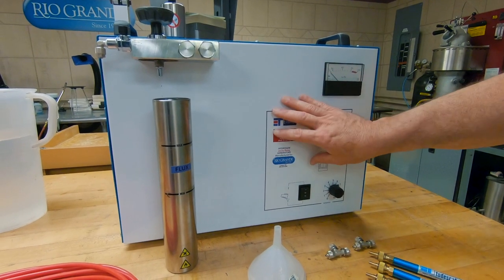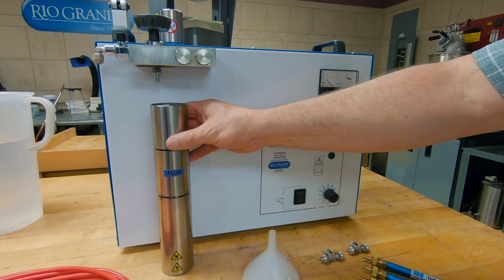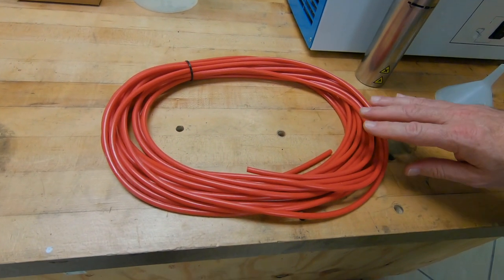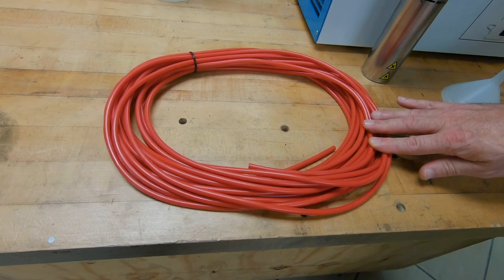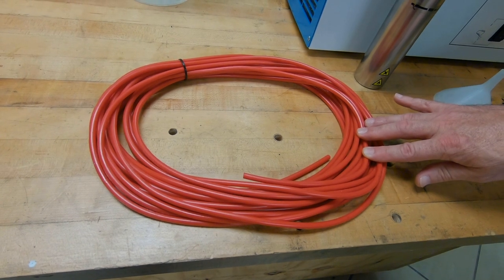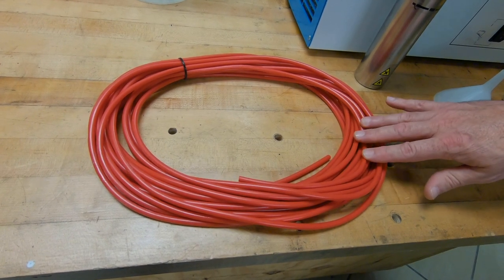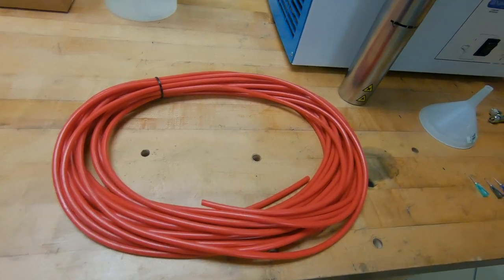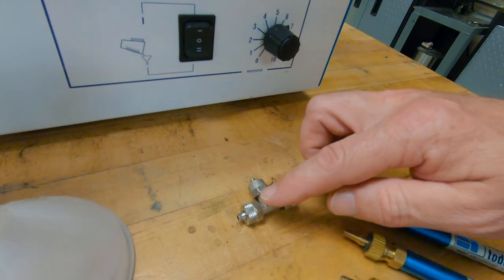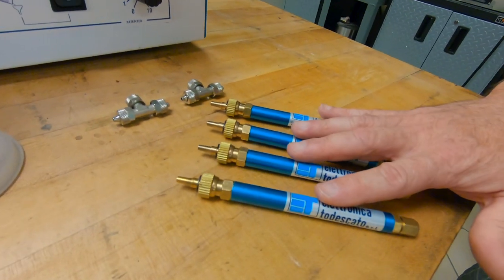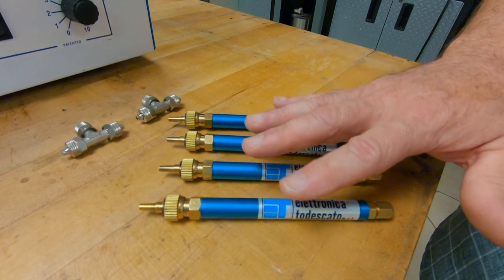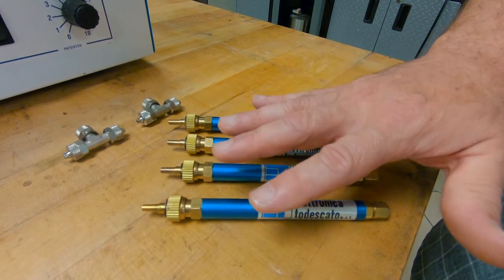The kit comes with the machine itself, a booster tank, and 10 meters of hose. You can actually customize the length of the hose. So if you have four benches that you need to run a torch to each bench, this will allow you to customize the length that you need. It comes with a plastic funnel, two T-fittings, and four torch handles. These are the regulated torch handles, and I'll tell you what I mean by them being regulated further on in this video.